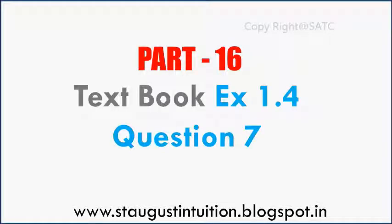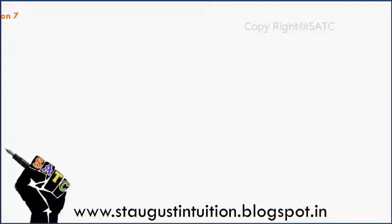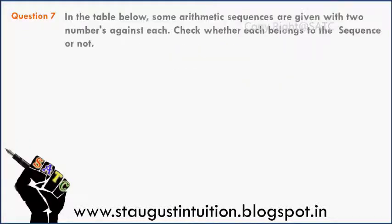Textbook exercise 1.4, last question — question number 7. In the table below, some arithmetic sequences are given with two numbers against each. Check whether each number belongs to the sequence or not.